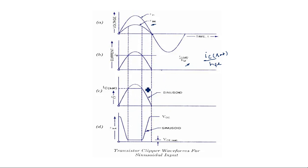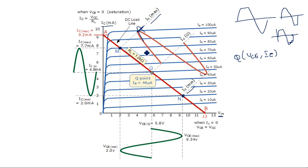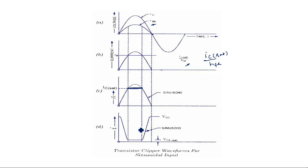At the same saturation current, clipping action appears — the positive peak is clipped off. When the input voltage is further increased, that portion is clipped and the waveform appears flat at that level. The output voltage appears in the reverse direction compared to the input because the transistor as an amplifier produces a 180-degree phase shift between input and output.